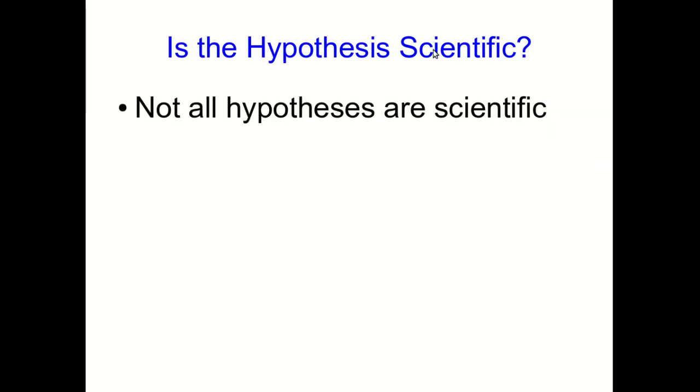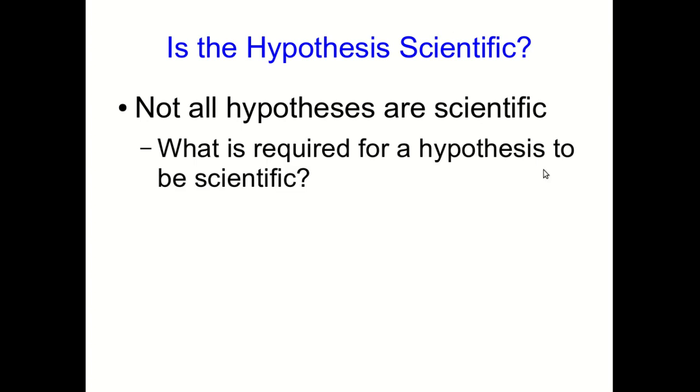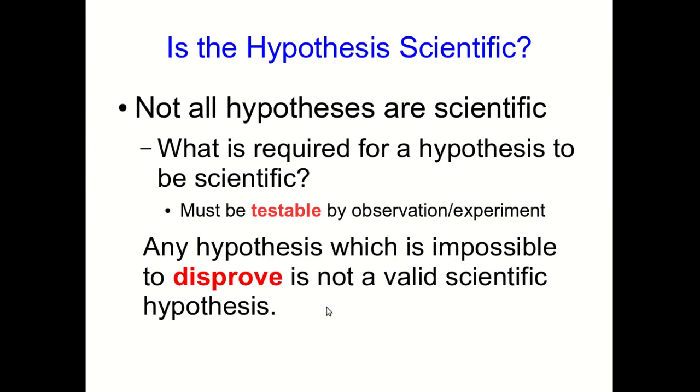Not all hypotheses are equally scientific, and so you might ask what's required for a hypothesis to be scientific. The main requirement is that it has to be testable by observation or experiment. And in particular, it's certainly not a scientific hypothesis if it's impossible to disprove. In one word, we say that a hypothesis must be falsifiable, which just means possible to disprove.